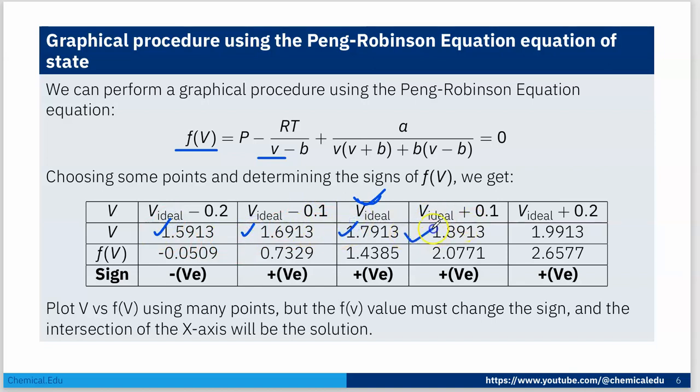Sign change is very important because if the sign is not changing, we have to change that value. At V_ideal - 0.2 (1.5913), f(V) is negative. For the next values, f(V) is positive, meaning the root lies between the positive and negative values. We can take as many points as needed to get good plots.